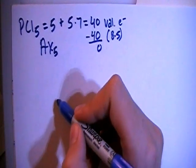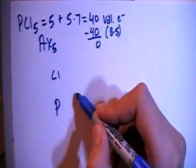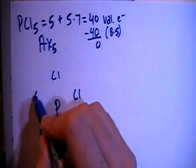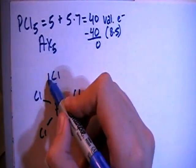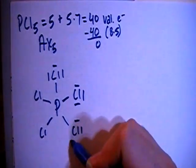Let's go ahead and draw this structure. You've got phosphorus in the center, surrounded by the 5 chlorines. Let's single bond all of them together, and now we can also fill in the octets for the peripheral chlorines.